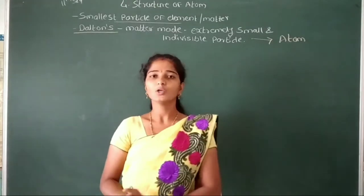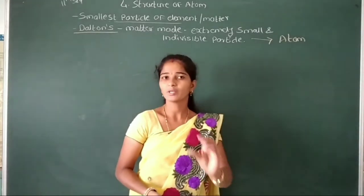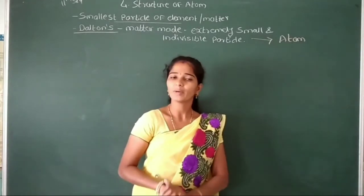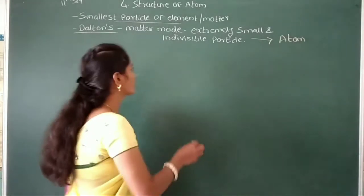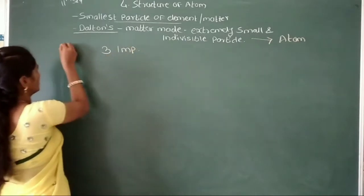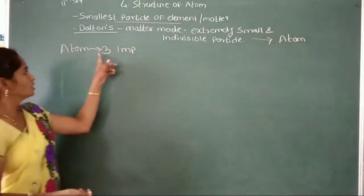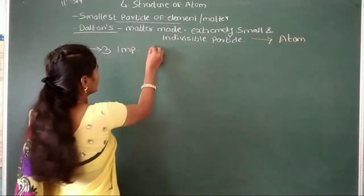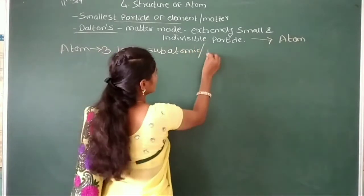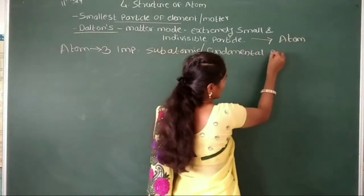There are approximately 35 sub-atomic particles of this atom. That means the smallest atom is again divided into even smaller particles, called sub-atomic particles. Out of these 35 sub-atomic particles, 3 sub-atomic particles are important. This atom is sub-divided into 3 important sub-atomic particles, also called the fundamental particles of atoms.